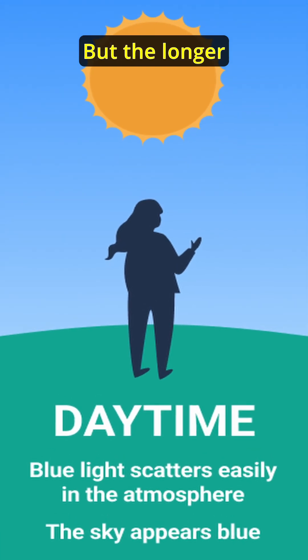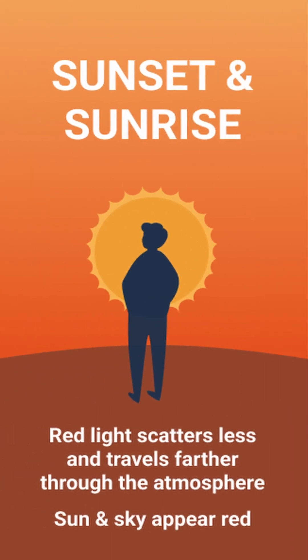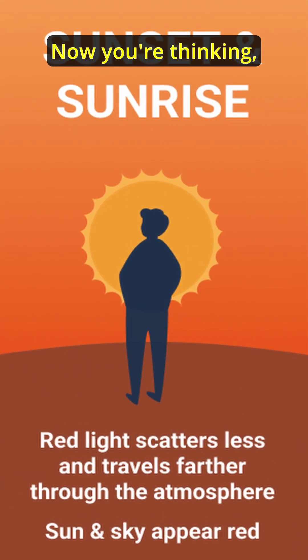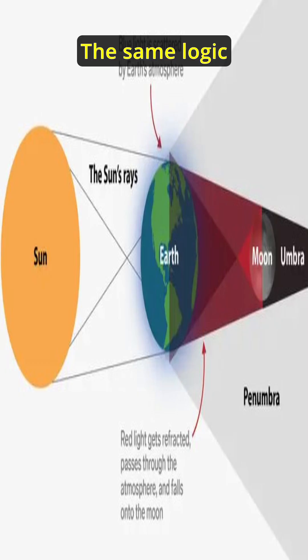But the longer wavelengths, that is red and orange, scatter less. So they travel farther. Now you're thinking, so you're explaining why the sky looks blue. The same logic applies to why the moon looks red during the lunar eclipse.